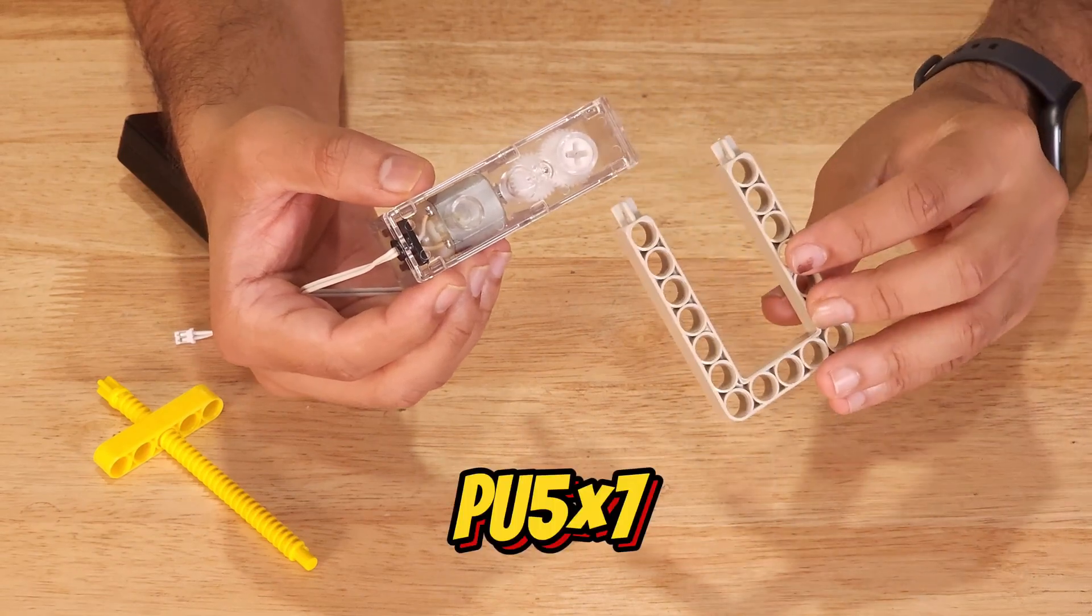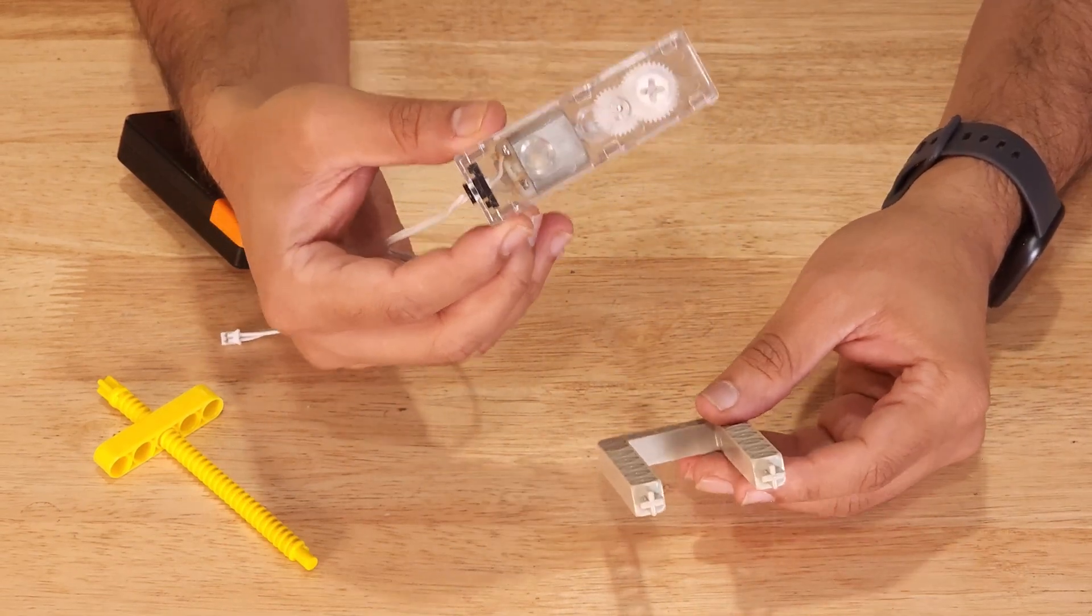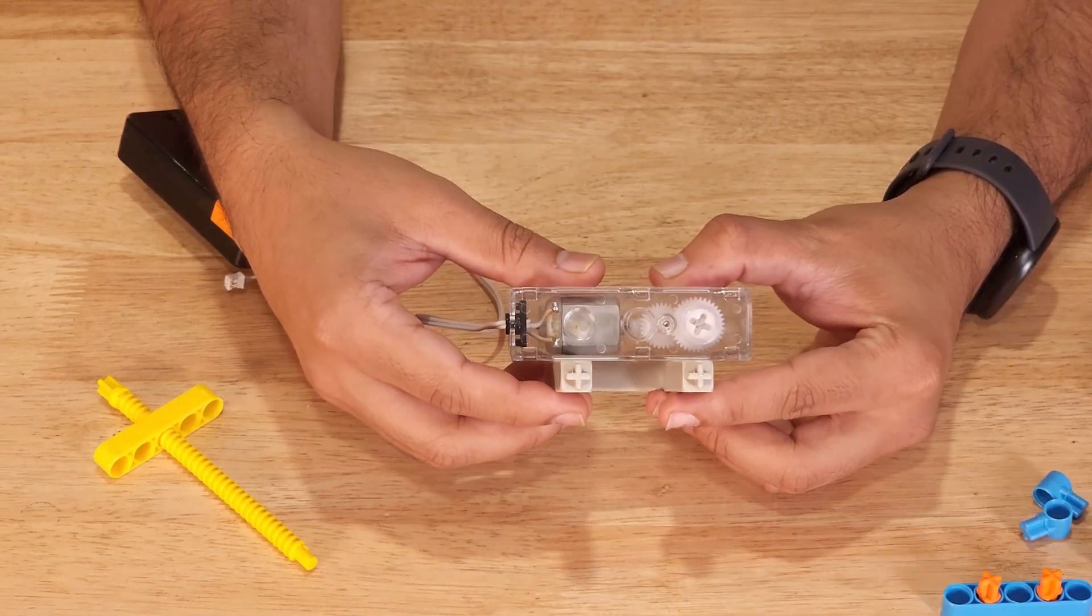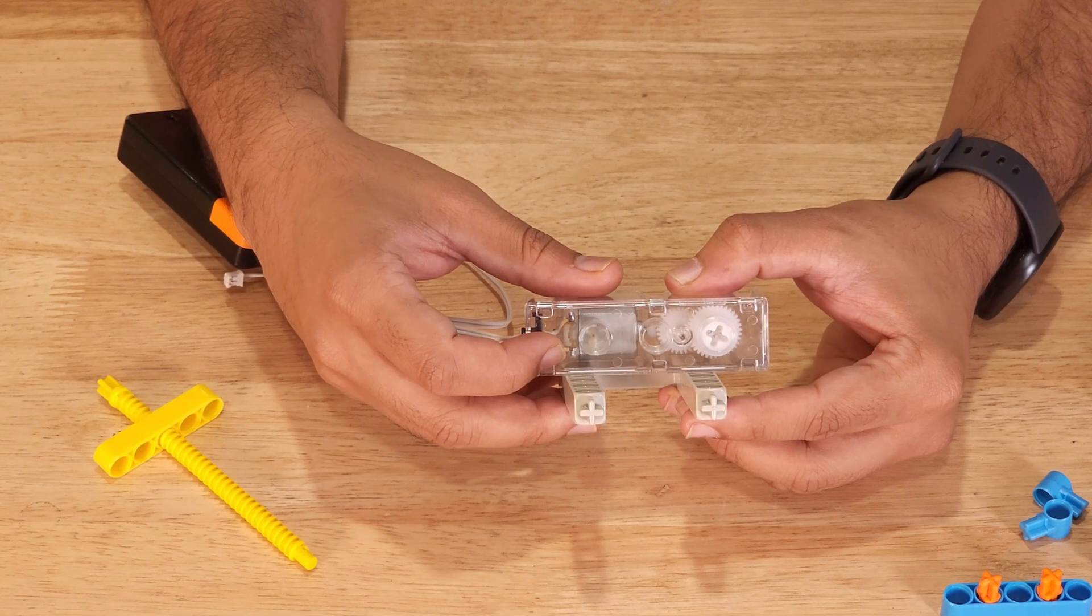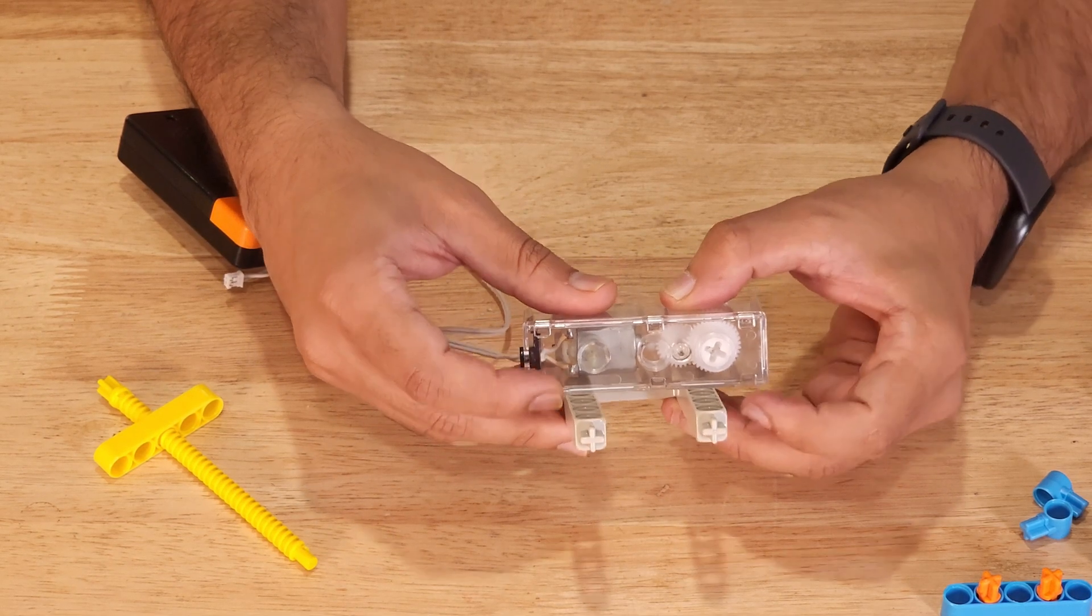Over here, we have a piece called PU5x7 and we will be attaching the motor to this piece. As you can see, it is difficult to attach the motor directly to this surface. That is why we are going to use a few other pieces to attach the motor to this surface.